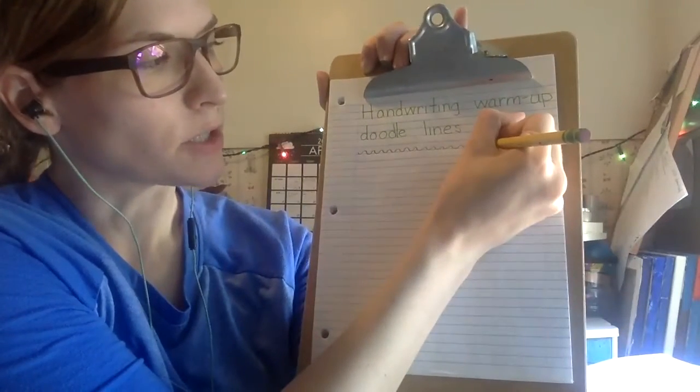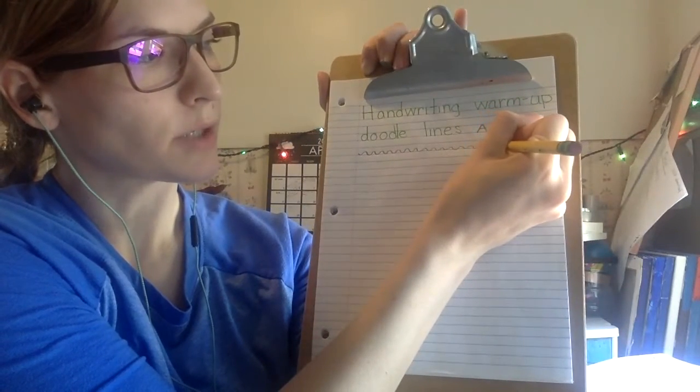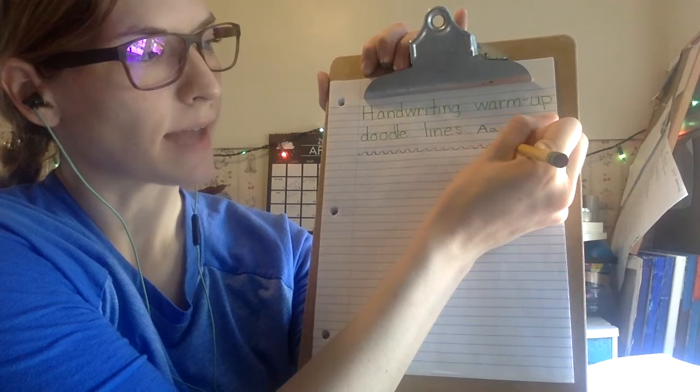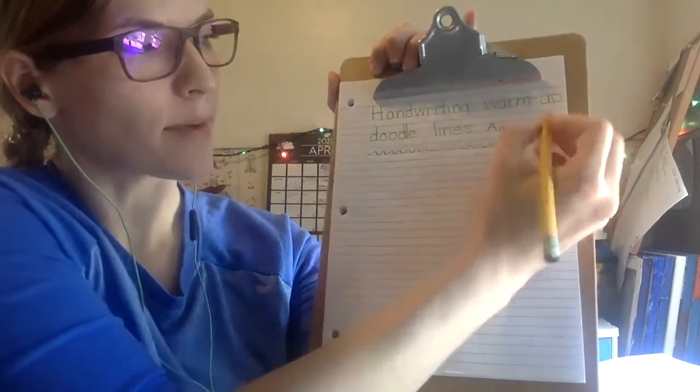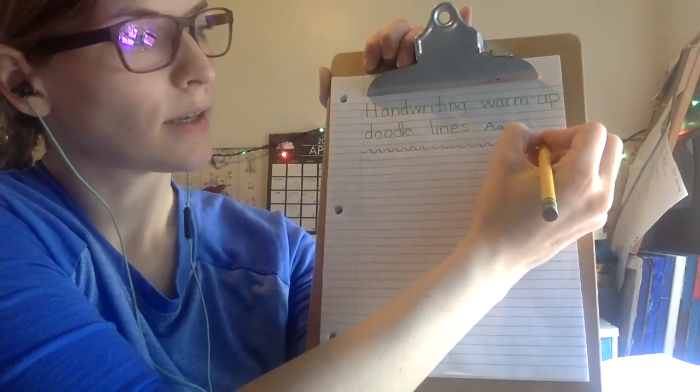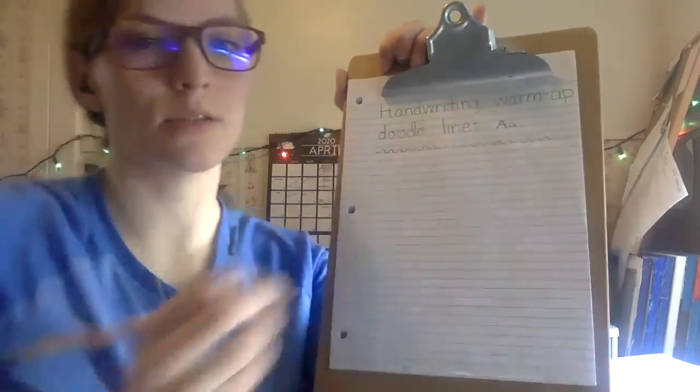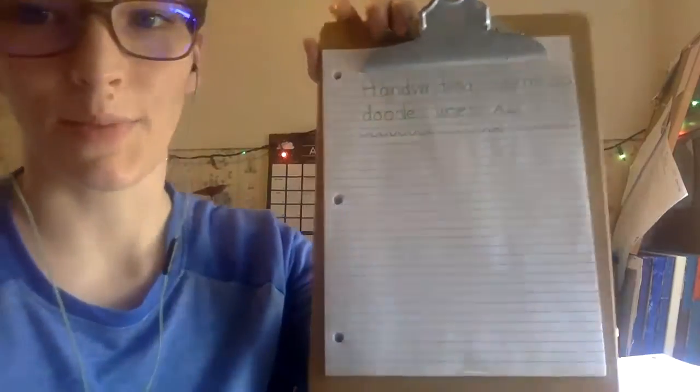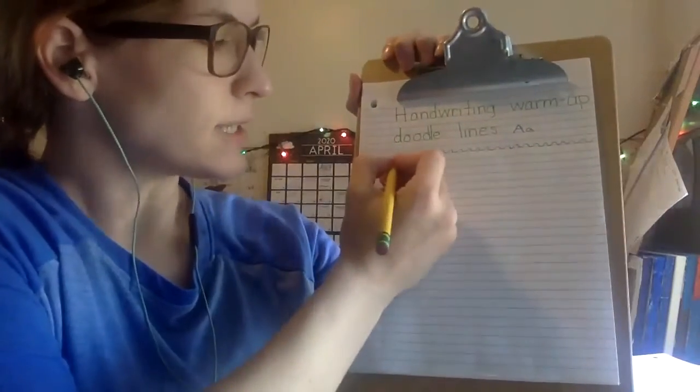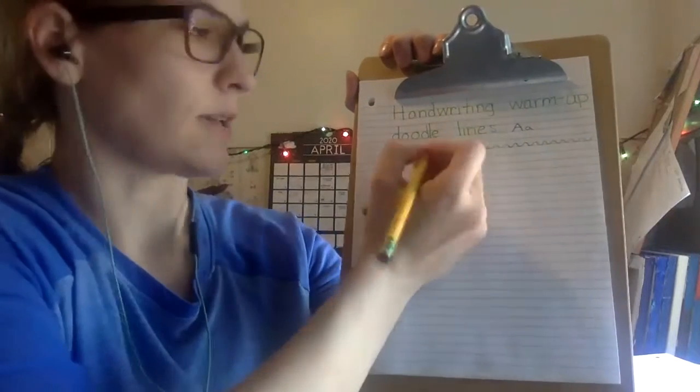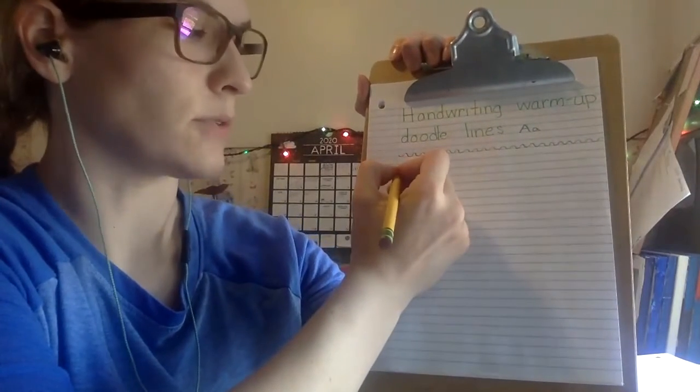You can continue your U curves and your rainbow curves all the way to the end of that line. Try to make them as even as you can and keep your pencil on the paper as best you can for as long as you can. Of course it is okay to pick up as you need to. Notice that I tried to make them as even as I could. I took my time. I wasn't rushing.